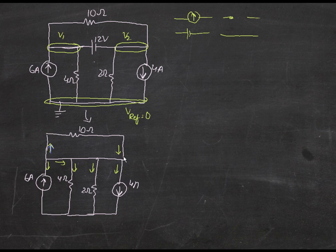After removing the voltage source and putting a wire in its place, you just get a wire connecting those nodes. This whole region becomes one node, because a node is a common point between more than one component. Since this is the common point between this resistor, this resistor, this current source, this current source, and this resistor, you take this whole region as one node.